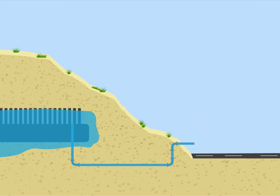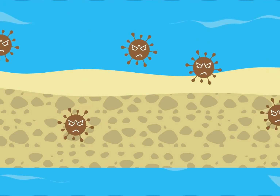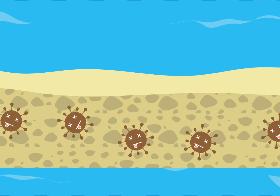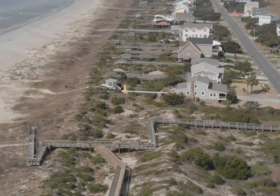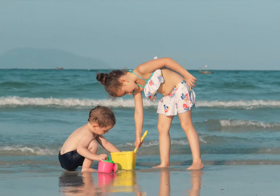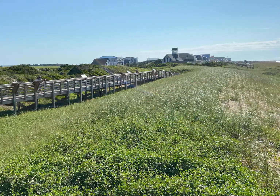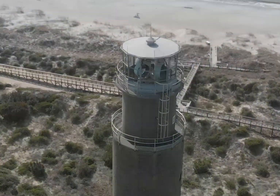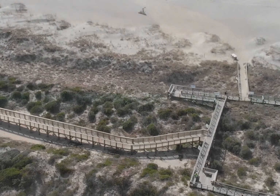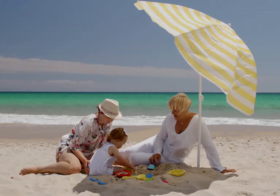Studies have shown that groundwater bacterial levels return to normal levels as much as 75 feet downstream from these systems. Coastal flooding is more than a mere nuisance — it can be a real safety hazard for people who live and vacation in these communities. Dune infiltration systems are a low-cost, low-tech solution for diminishing stormwater discharge and lowering bacterial loads to recreational beaches and reducing beach closures.